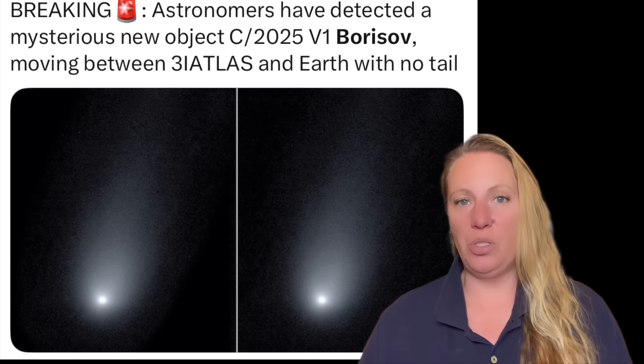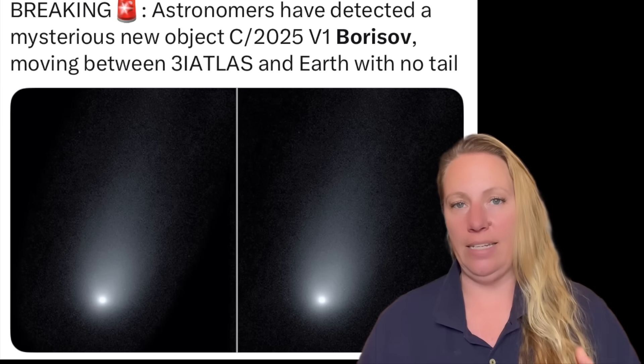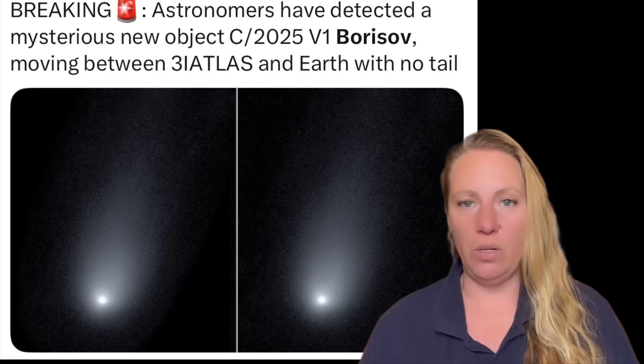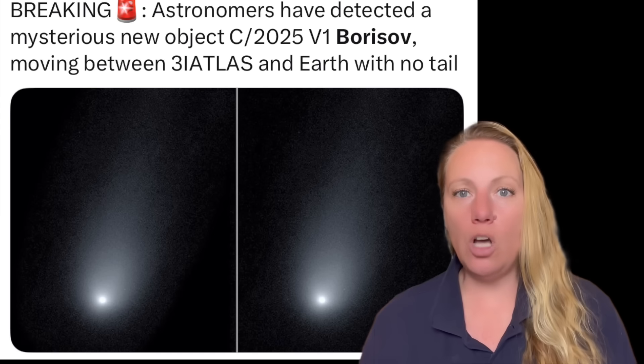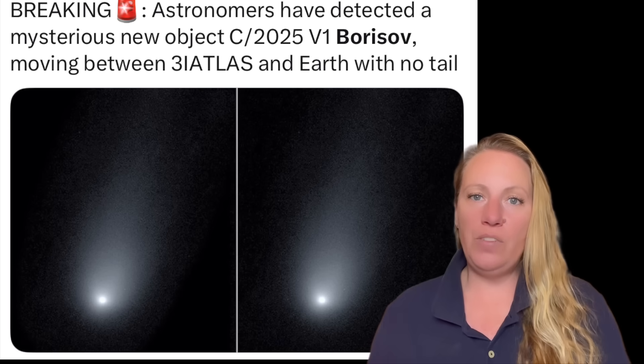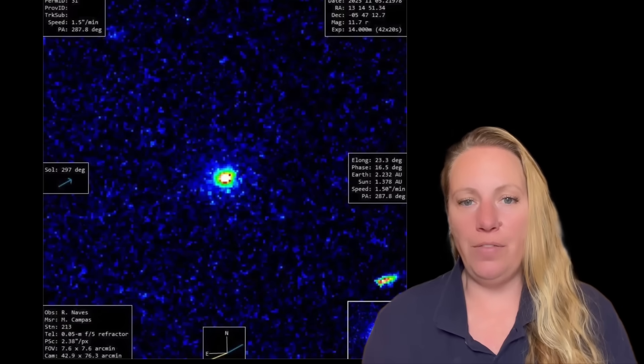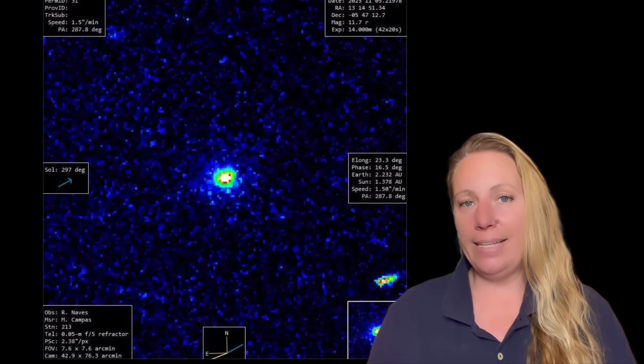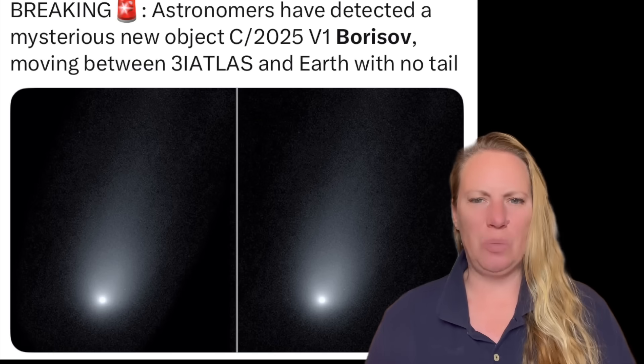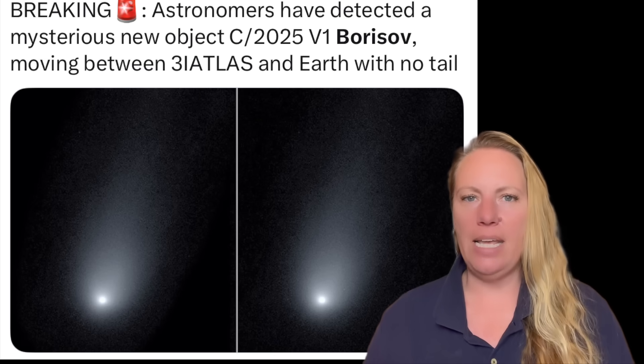And similar to 3i/ATLAS, which we just have learned, which used to have two tails, an anti-tail and a tail. I've made the video about it. Watch it in the end screen. The tail's gone. We've seen this in the latest image from November 5th. So Borisov, like ATLAS, also does not display a clear cometary tail.